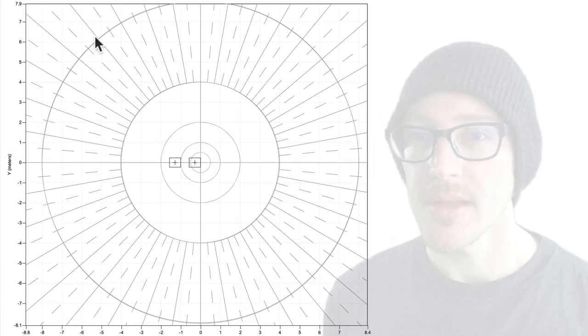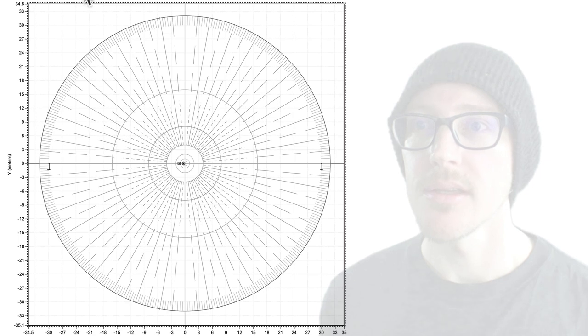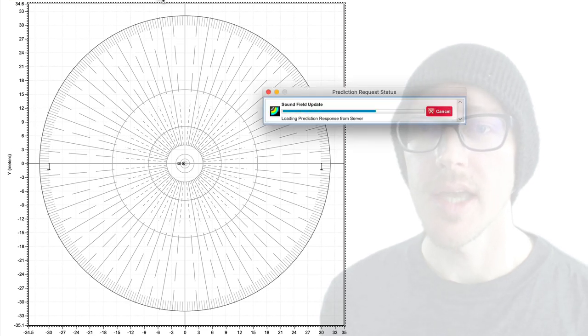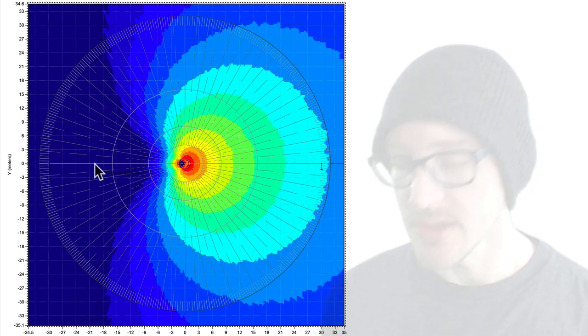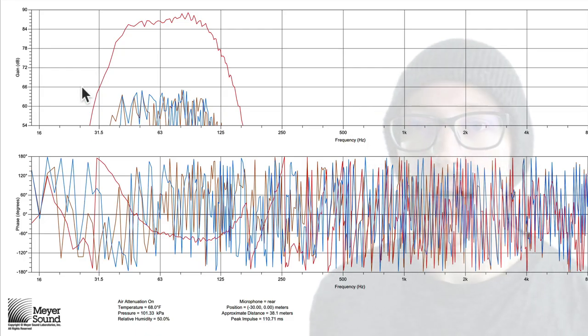And if we zoom out here and look at a prediction of 80 Hertz, this is why we get this nice cardioid shape in the front, cancellation in the rear. And if we want to look at our front to back ratio with our microphone in the front and the rear, we can see that we have a nice healthy 20 dB front to back ratio.